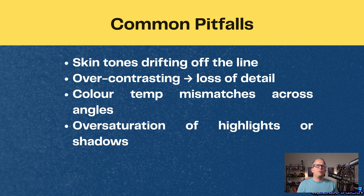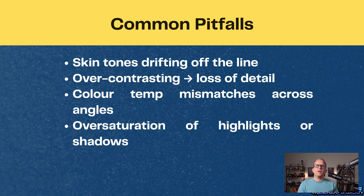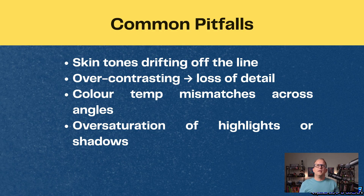I want to highlight some common pitfalls to avoid. Letting skin tones drift off that skin tone line — if it doesn't look human, you've gone too far. Over-contrasting — pushing the contrast too much and losing detail in shadows or highlights. Forgetting to normalize color temperature across multiple angles — nothing kills continuity like mismatched shots. And over-saturating highlights or shadows, which makes your footage look a little bit artificial.